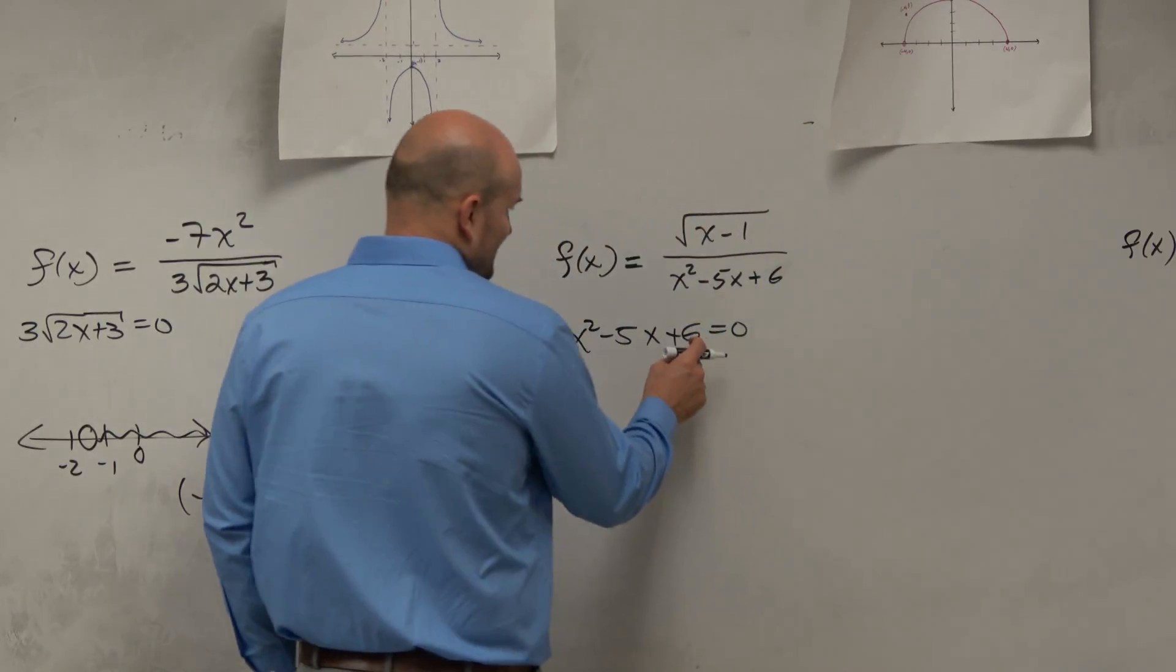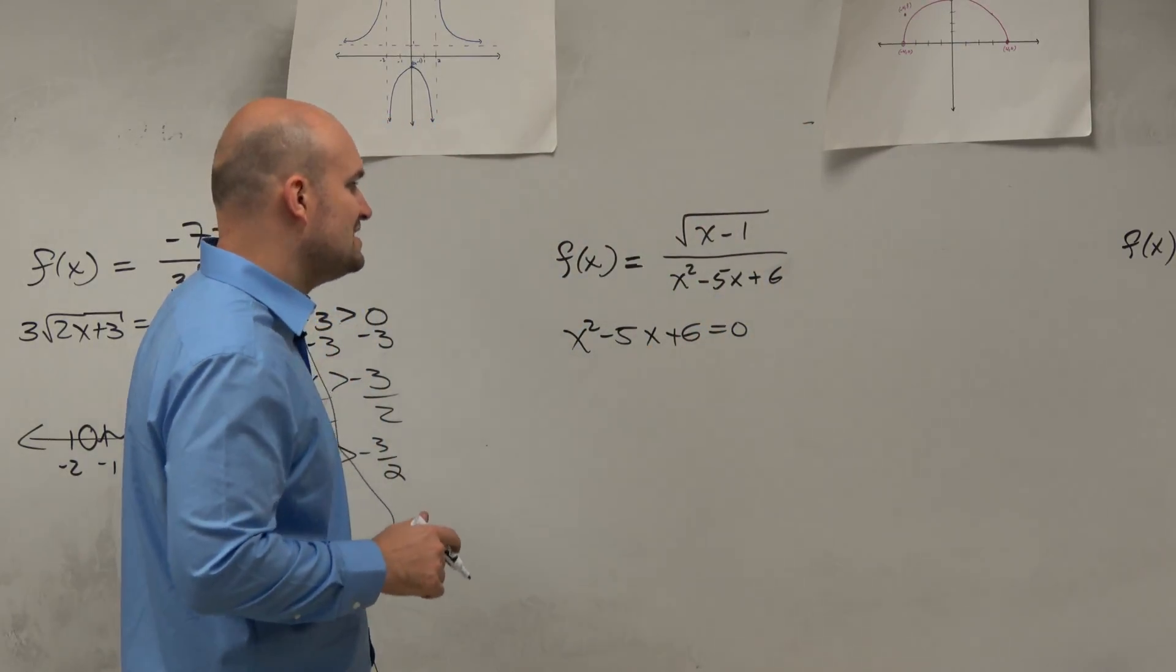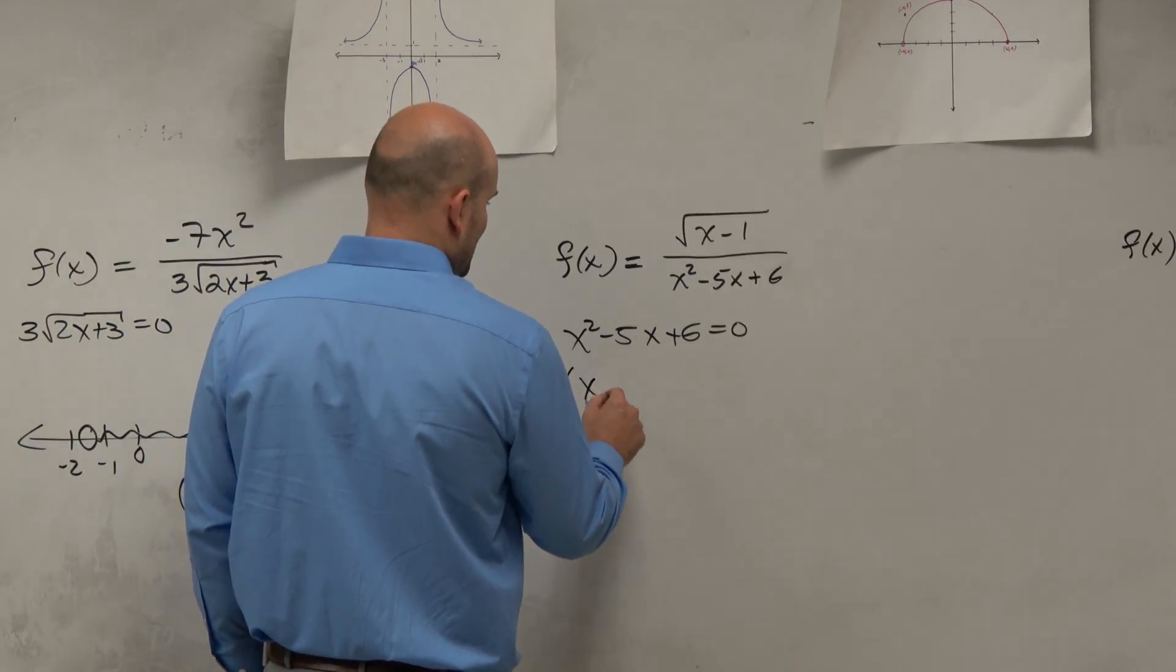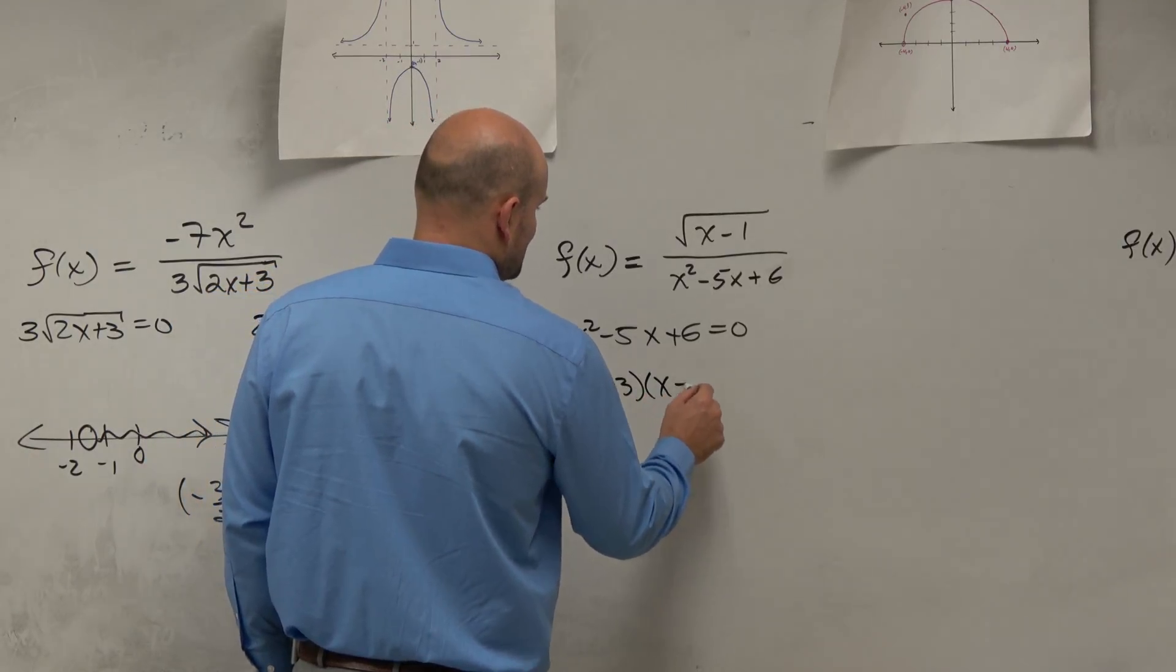This is basically asking us what two numbers multiply to give you 6 and then add to give you a negative 5. So this would be x minus 3 and this is x minus 2.